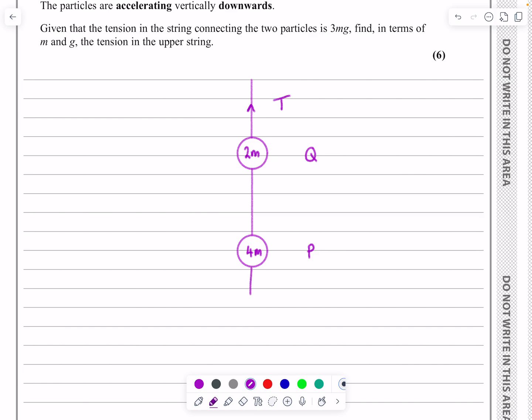Well, I've got 4mg acting down there. I've got two tensions here, and we know that the value of that is 3mg. And then we've also got the weight of the particle acting down, which is 2mg.